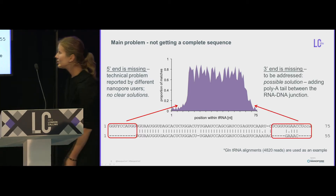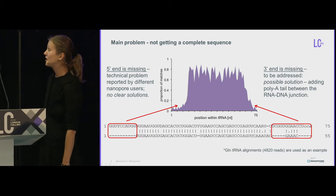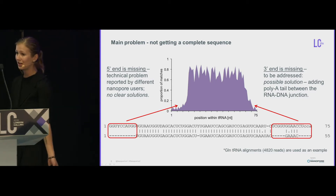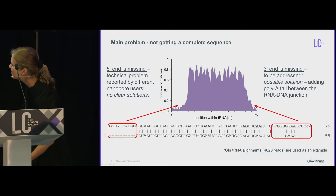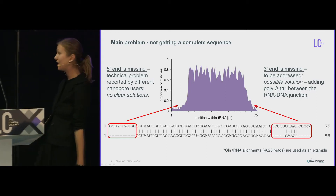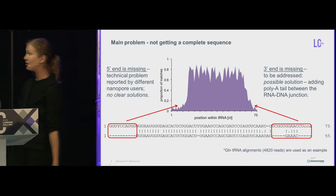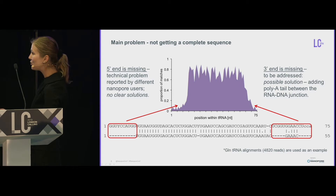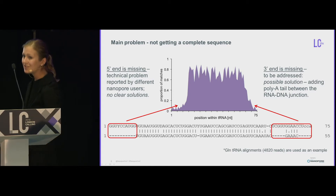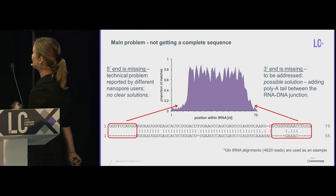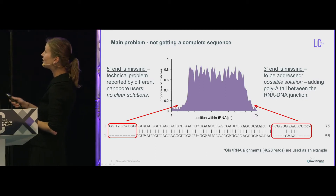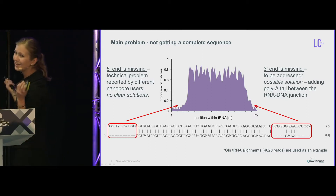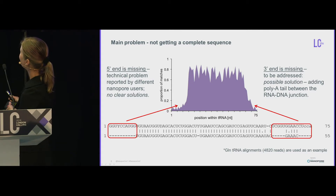We're also not getting the complete sequence at the 3' end. For ultra-long reads, losing 10 nucleotides wouldn't matter, but if you only have 75 nucleotides and you're losing both the 3' and 5' ends, what's left? And if you want to distinguish that remainder between different tRNAs, it's even less probable. So we decided to solve the 3' end problem ourselves, since the 5' end issue should be addressed by Oxford Nanopore themselves at some point.